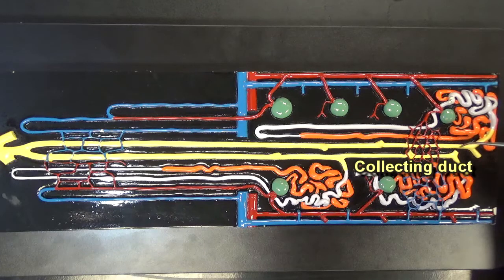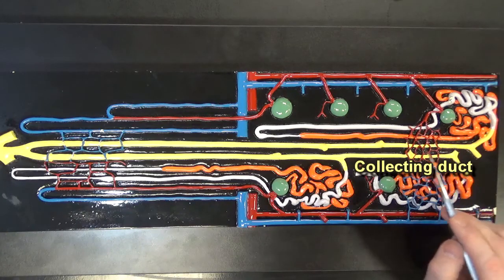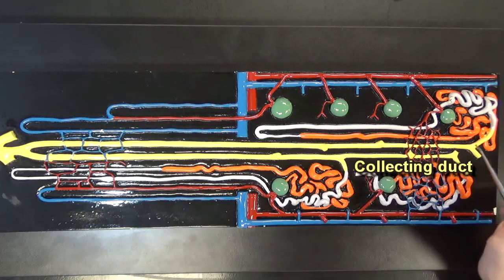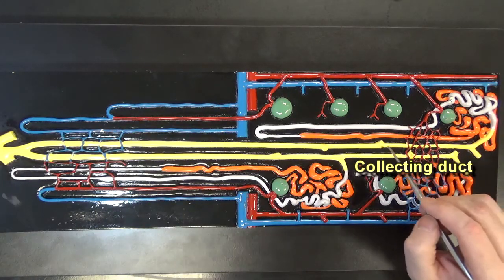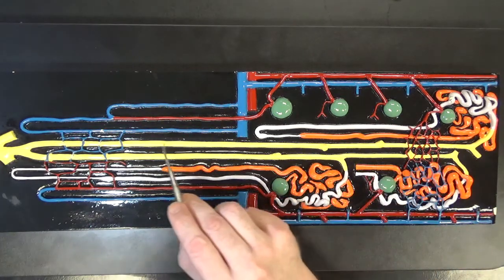Now by the time the filtrate gets to the collecting duct that filtrate is considered urine. That's why this collecting duct is often depicted as a yellow tube so it will travel down through the collecting ducts so that the urine can be released into a minor calyx.